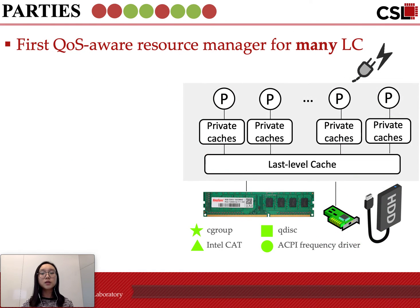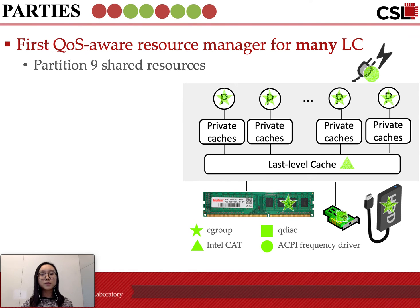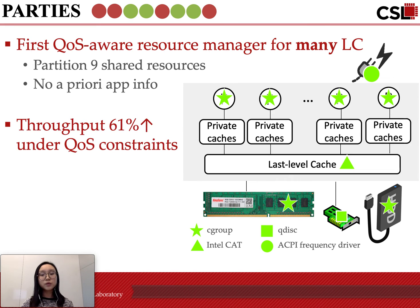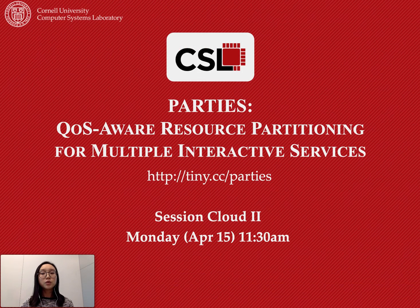We designed Partys, which is the first QoS-aware resource manager designed for any number of latency-critical jobs. Partys partitions nine shared resources at the same time and does not require any offline application knowledge. It improves system throughput and is able to adapt to varying load patterns. Please come to session Cloud 2 on Monday at 11:30 to learn more.